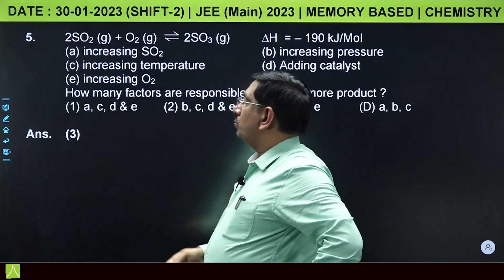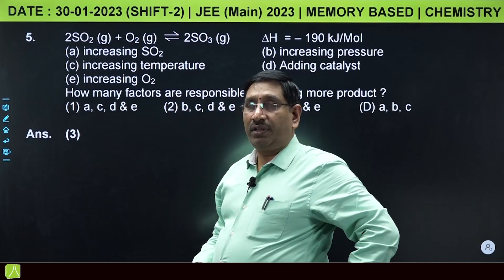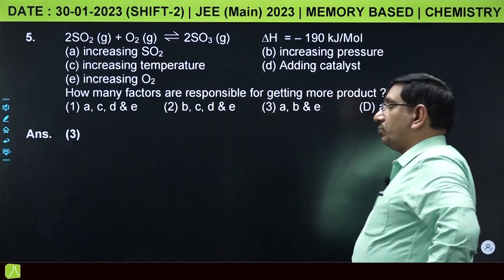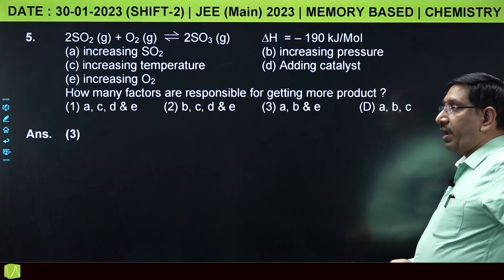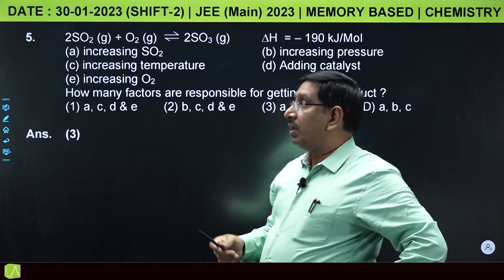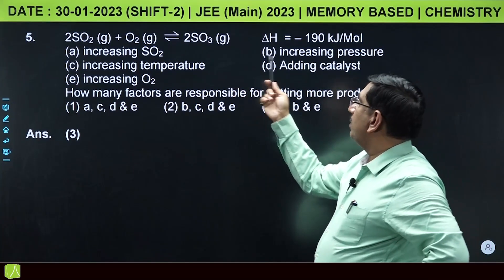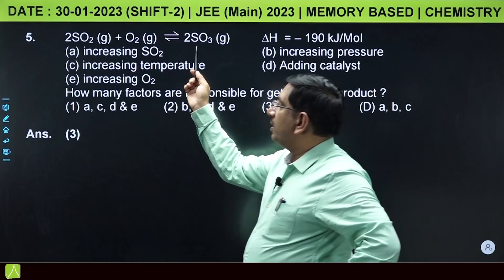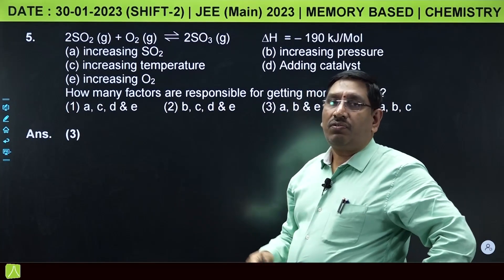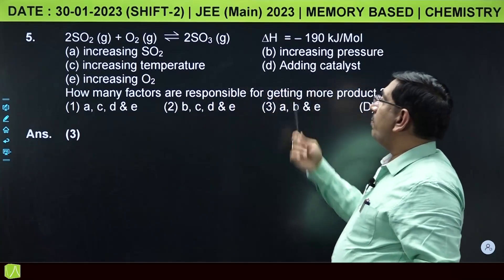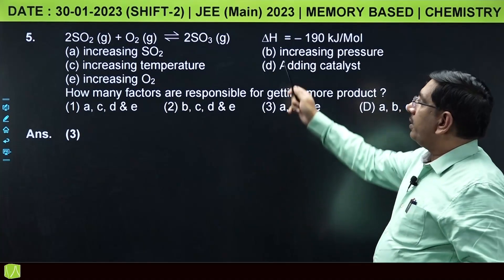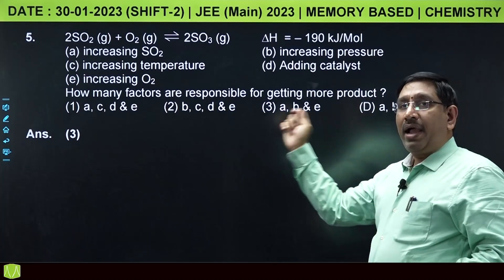On increasing SO2, it will forward the reaction. Similarly, increasing O2 also makes this reaction forward. Increasing pressure: on this side there are 3 moles, on this side 2 moles, so increasing pressure favors the forward reaction. This reaction is exothermic, so increasing temperature will shift the reaction backward.